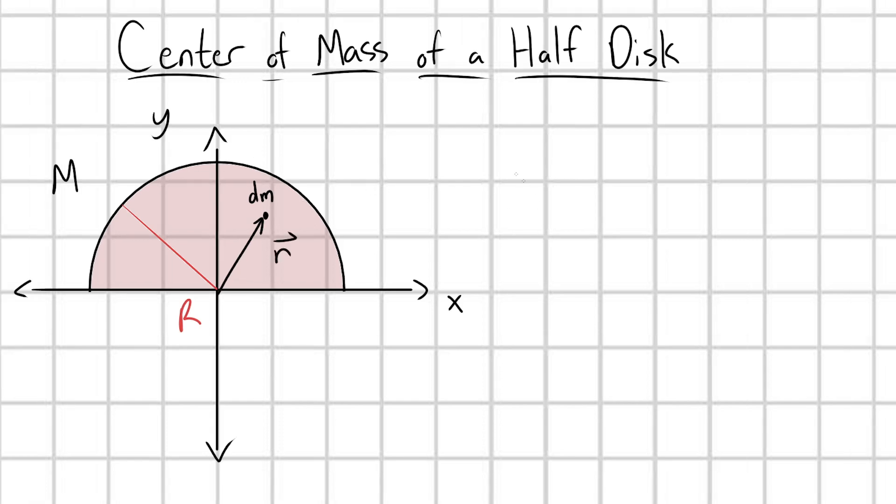With this notation, the center of mass, which I'm going to call capital R, is defined as the integral over my half disk, I'll just call this hd for half disk, of r dm divided by the total mass of my half disk M.